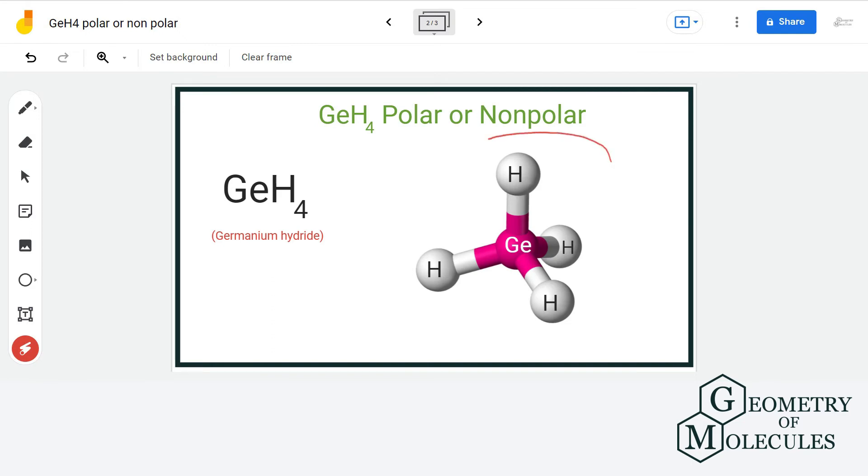As you can see, the molecular geometry of GeH4 is tetrahedral, which is quite symmetrical, resulting in symmetric charge distribution. There are no signs of formation of poles in this molecule.